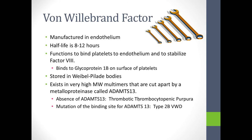Von Willebrand factor is manufactured by the endothelium and has a half-life between 8 and 12 hours. Its function is to stabilize factor 8, which by its nature is not particularly stable, and also to bind platelets to endothelium. It's bound to glycoprotein 1B on the surface of platelets. People with Bernard-Soulier syndrome have a mutation or defect in this receptor, so they're unable to bind von Willebrand factor.